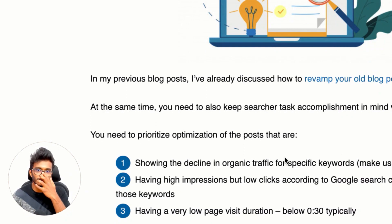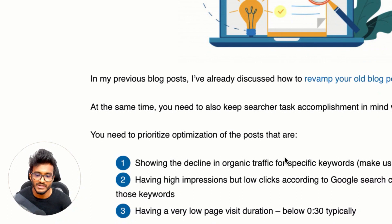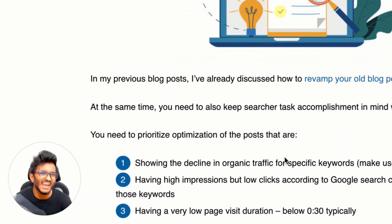Also use Google Search Console — under Search Analytics, you'll see all keywords your site appears for, including impressions, clicks, and ranking position. Identify keywords with high impressions but low clicks. Then go to Google Analytics, pull the All Pages report under Behavior, and sort by ascending average page visit duration. If any page has under 30 seconds of visit duration, analyze why, look at top-ranking posts for that keyword, understand what goals they satisfy, and create a fresh content outline for your poorly engaged posts.